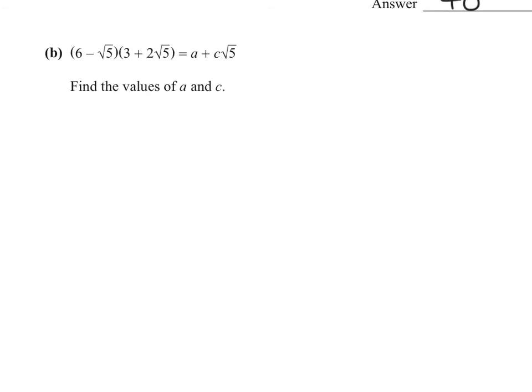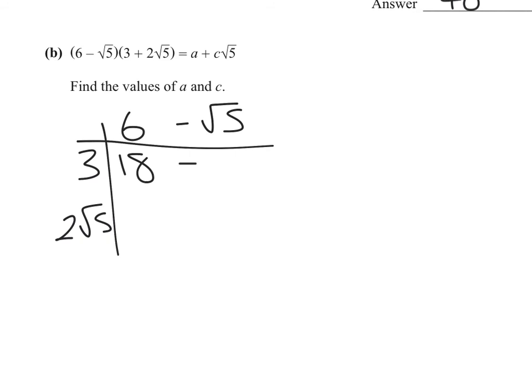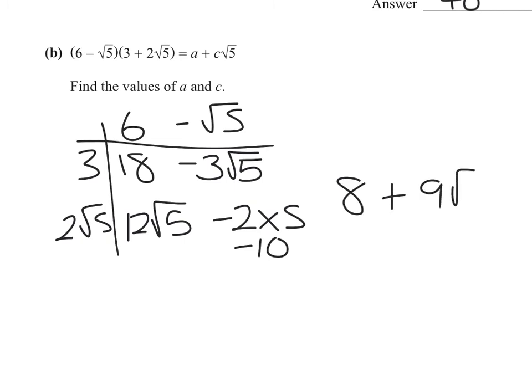We have to expand the brackets. 6 minus root 5, 3 plus 2 root 5. 3 times 6 is 18, 3 times minus root 5 is minus 3 root 5, 6 times 2 root 5, 12 root 5, and 2 root 5 times minus root 5 will be minus 2 times 5, so that's minus 10. That gives us 18 minus 10, which is 8, and 12 minus 3 root 5, which is 9 root 5. So the A is 8, and the C is 9.